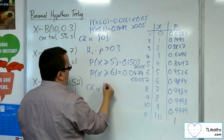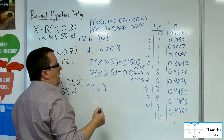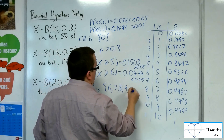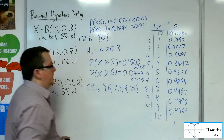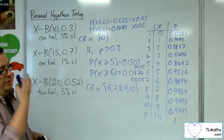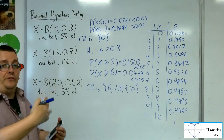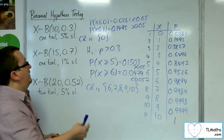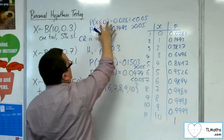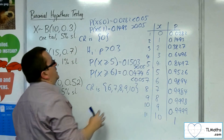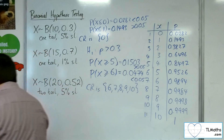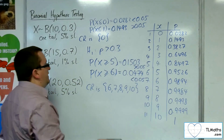P(X ≥ 5) = 1 − P(X ≤ 4) = 0.1503, which is greater than the significance level. P(X ≥ 6) = 1 − P(X ≤ 5) = 0.0474, which is less than the significance level. The value less than the significance level identifies the critical region. So the critical region is x ≥ 6, meaning 6, 7, 8, 9, and 10. If you observed any of those values, you would have evidence to suggest the probability is greater than 0.3.